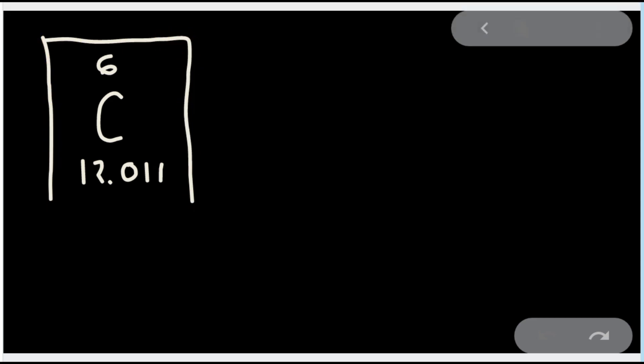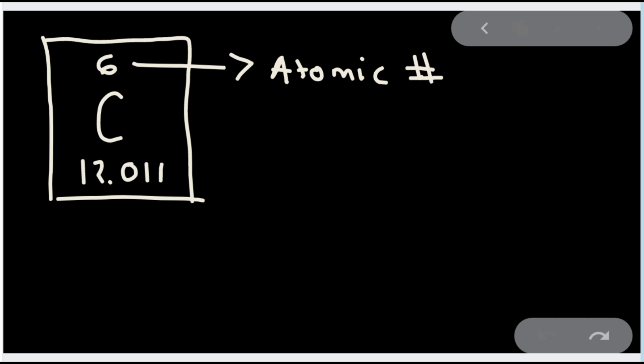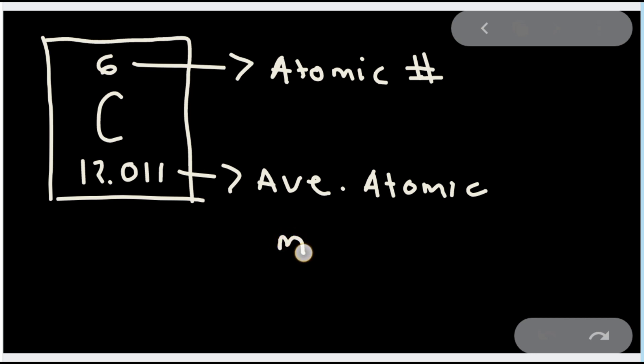Let's say we have the element carbon, which is written in this symbol. As you look on the periodic table, you see this form where 6 represents the atomic number, and 12.011 represents the average atomic mass. The atomic number is also equal to the number of protons.